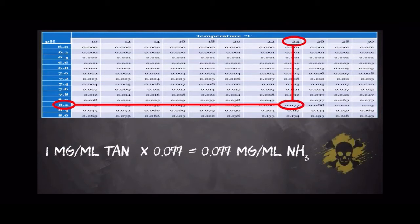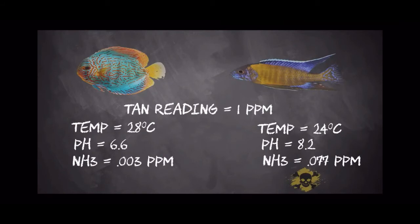Now in these two examples, we can see that despite the same TAN reading, there's quite different percentages of toxic ammonia or NH3 that's present directly due to the effects that that pH and the temperature have on the amount of ammonia or ammonium that's present.